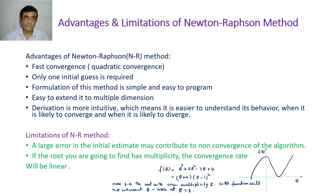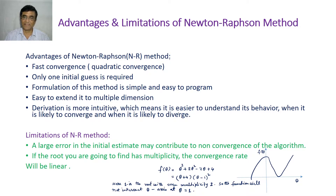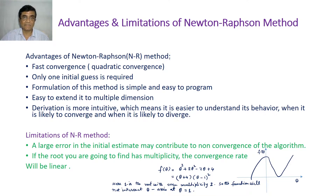It is also not difficult to extend the Newton-Raphson method to multiple dimensions — we are going to see that today. The derivation is intuitive, meaning you can predict the algorithm's behavior by observing whether it is converging or diverging. If it diverges, then we can take action. So all of this is very transparent.